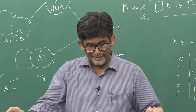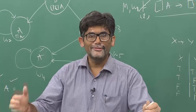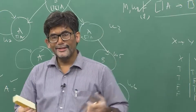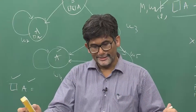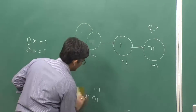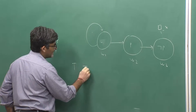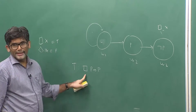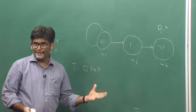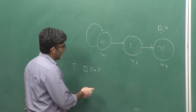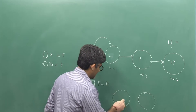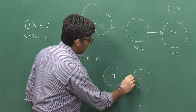Now Kripke considers various modal logical systems: K, T, D, S4, and S5, and examines under what conditions given theorems hold. Let us look at the T axiom, which states that necessity of P implies P. We can check whether this is valid in K — we can easily construct a counterexample where necessity of P is true but P is false.